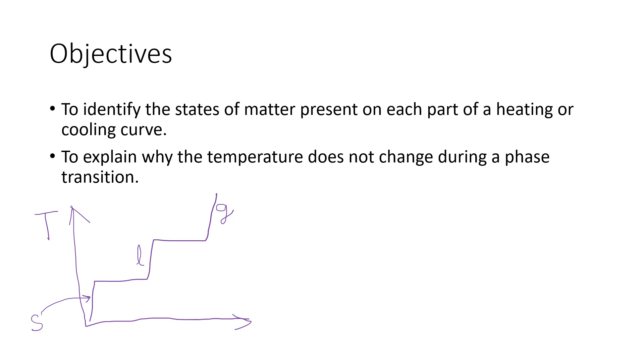But then on these horizontal plateaus, I'd expect you to recognize that there are two states of matter present. For instance, on this lower one where melting is taking place, we have a solid transitioning into a liquid. Or on this upper one where boiling is taking place, we have a liquid transitioning into a gas. So there are actually two states of matter present on the horizontal regions. And there will be just one state of matter present on the slanted regions.